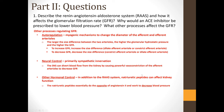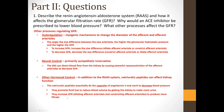Natriuretic peptides do essentially the opposite of angiotensin-2, working to decrease blood pressure and blood volume. They increase GFR by dilating the afferent arterioles and constricting the efferent arterioles, causing the kidney to produce more filtrate. They also decrease sodium reabsorption, so sodium stays in the urine, which blocks water reabsorption — keeping more water in the filtrate and thus in the urine — increasing fluid loss, which lowers blood pressure and blood volume.